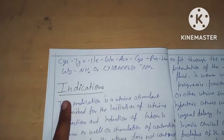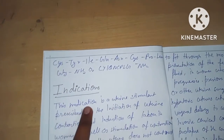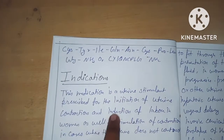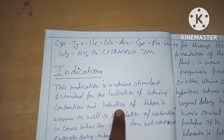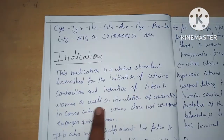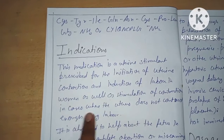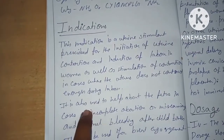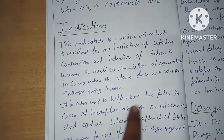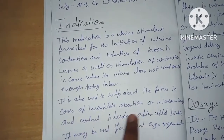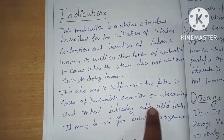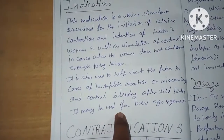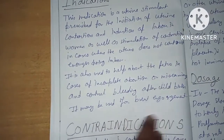Next is indication. This medication is a uterine stimulant prescribed for the initiation of uterine contraction and induction of labor, as well as stimulation of contractions in cases where the uterus does not contract enough during labor. It is also used to help manage incomplete abortion or miscarriage, and to control bleeding after childbirth. It may also be used for breast engorgement.